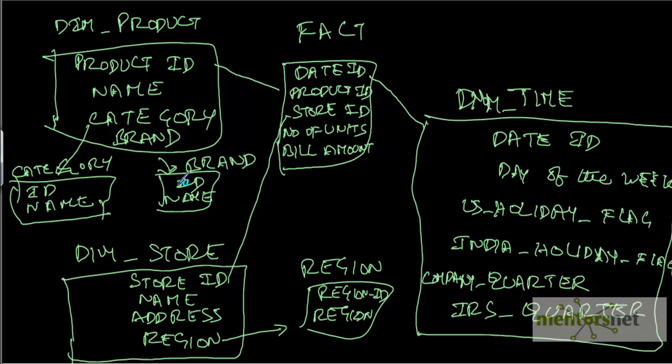If you split that into a separate dimension, whenever it makes sense, like in case of Walmart where the number of records are huge, then you can directly come and query the brand table itself to know what are the distinct brands sold in Walmart.